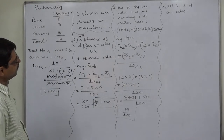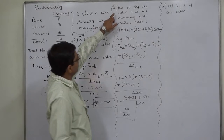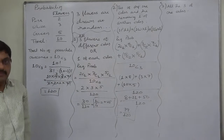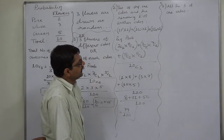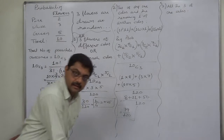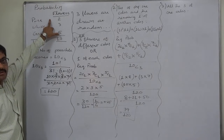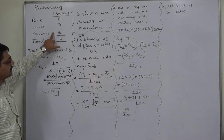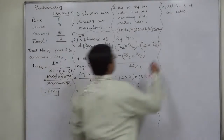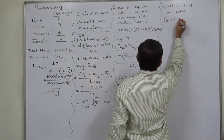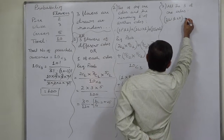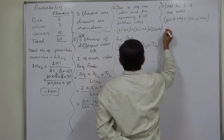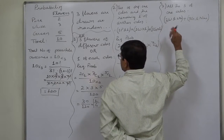The probability of drawing three flowers such that two are of one color and one of another is 79/120. The last case: all three flowers of any one color. Practically, three pink flowers are not possible since there are only two pink flowers. So either three white or three green flowers — three white and none of any other color, or three green and none of any other color.